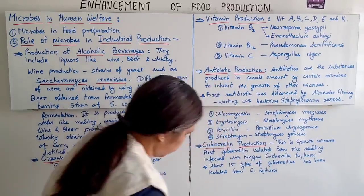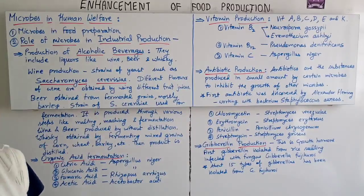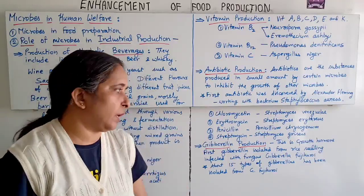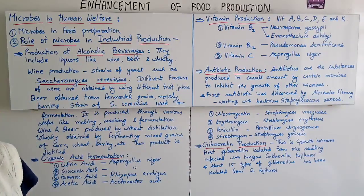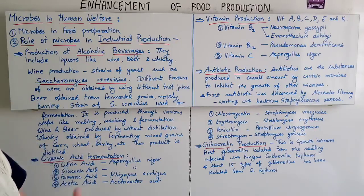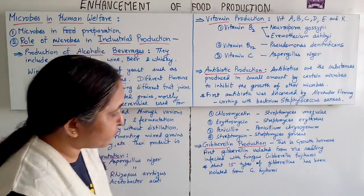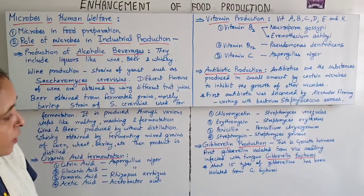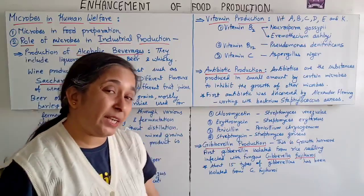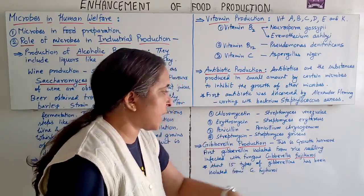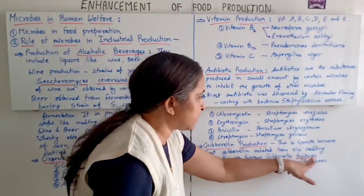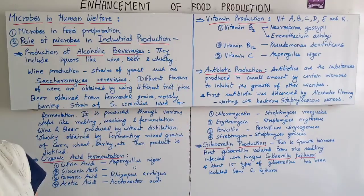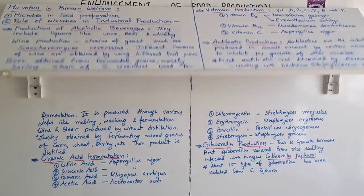Next is gibberellin production. Gibberellin is a growth hormone. The first gibberellin was isolated from rice seedlings infected with the fungus Gibberella fujikuroi. About 15 types of gibberellins have been isolated from this species.